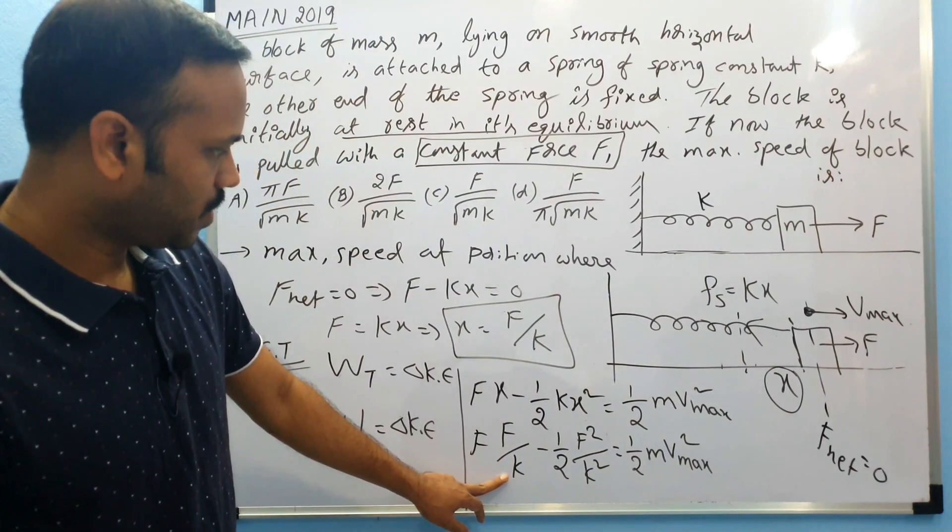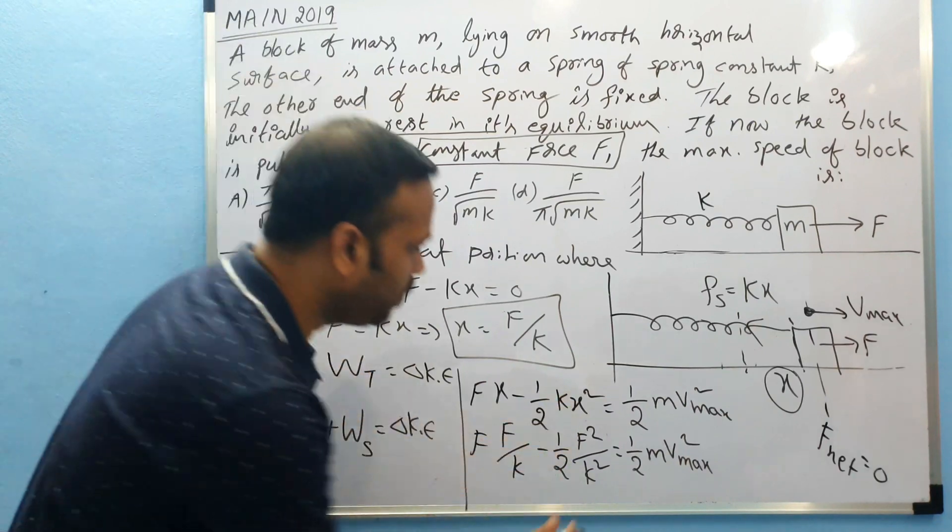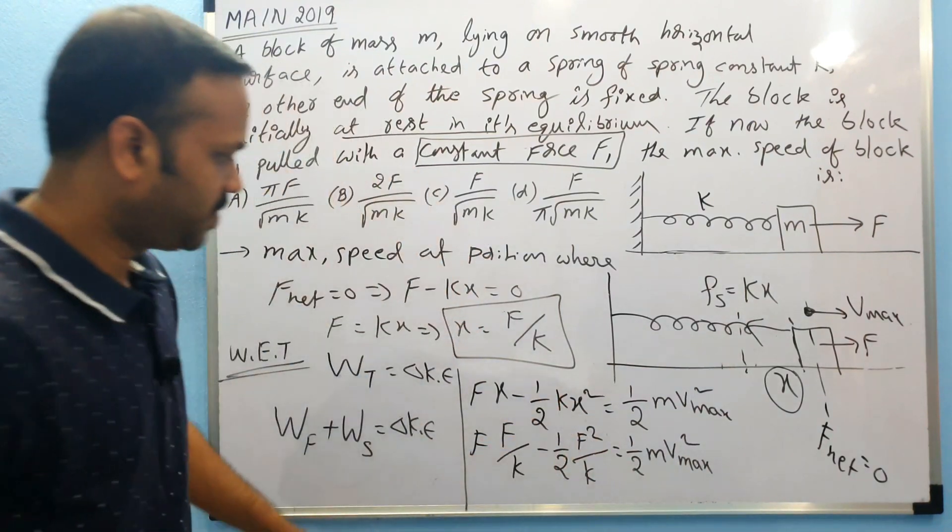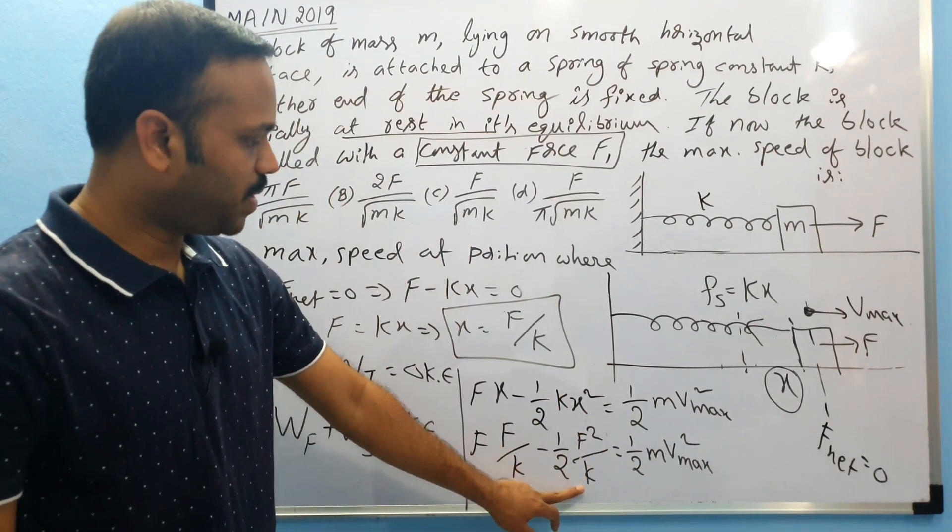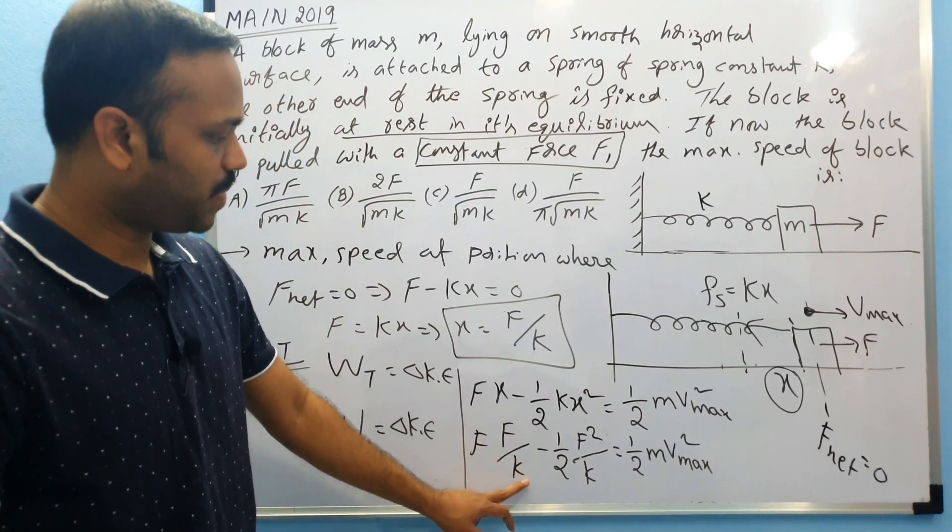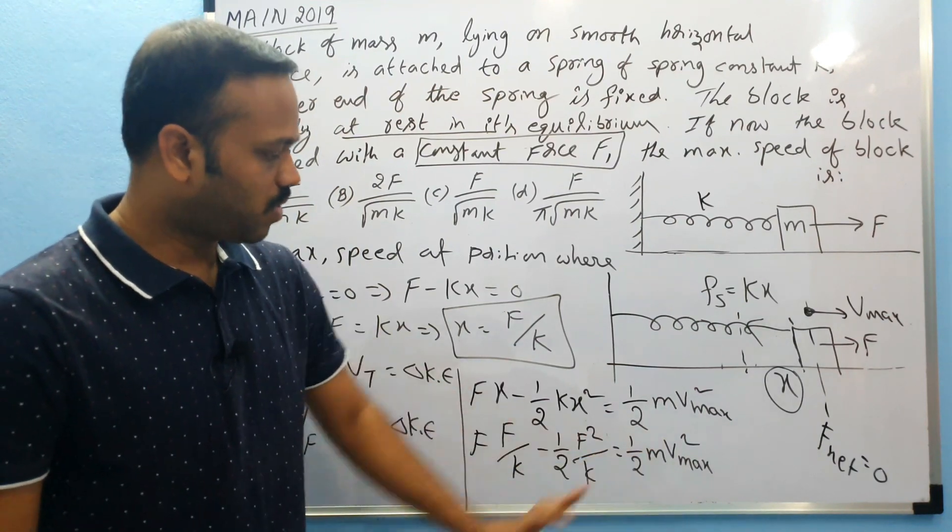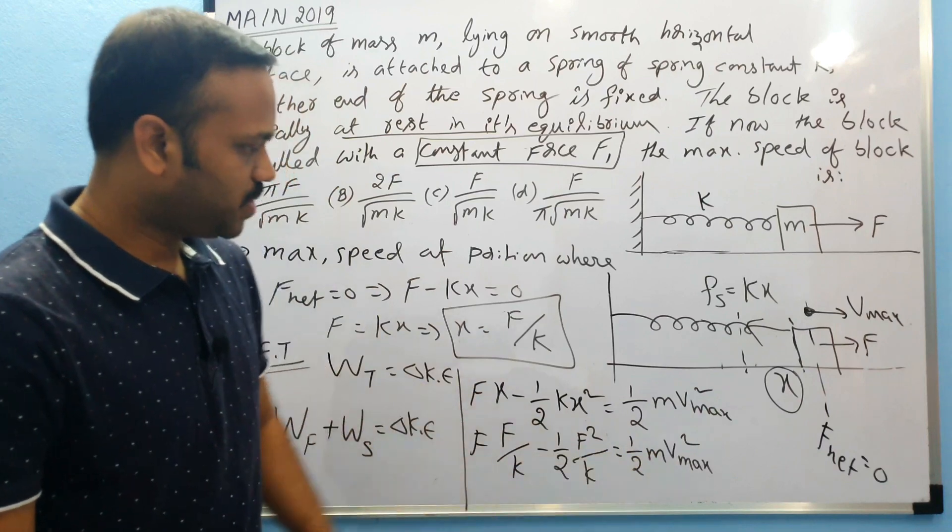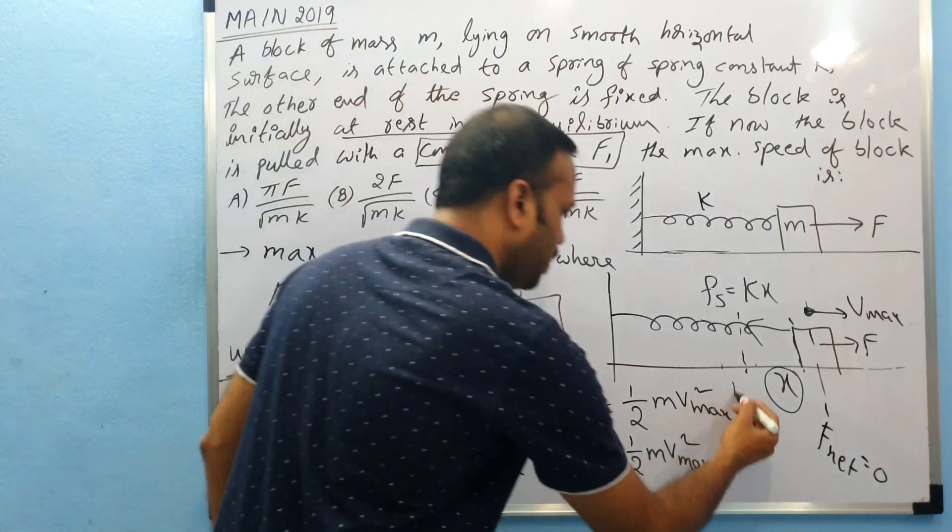If I cancel, this is F squared by k, and here k will be cancelled. Here also we get F squared by, one by two F squared by k. So eventually we get one by k, F squared by k, one by two, one by two cancel, and m comes down.